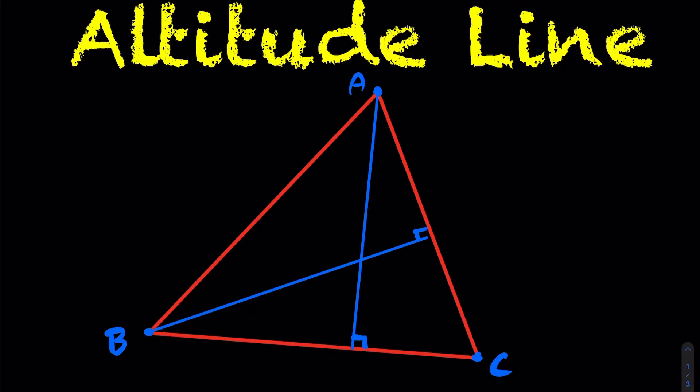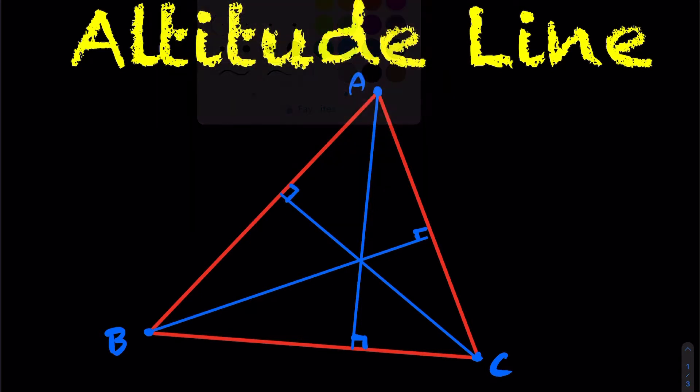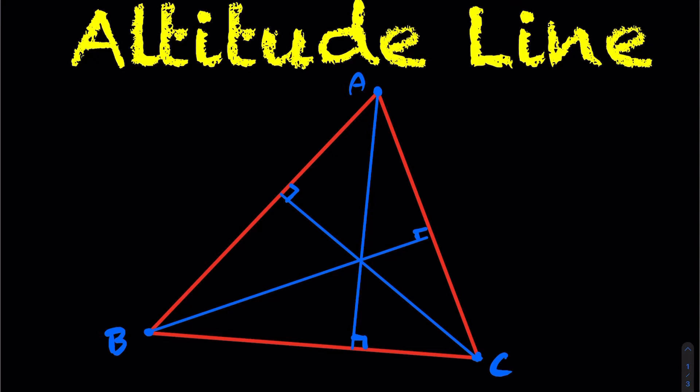And lastly, altitude line C is going to go from vertice C to the opposite side at 90 degrees. So every triangle has three different altitude lines.